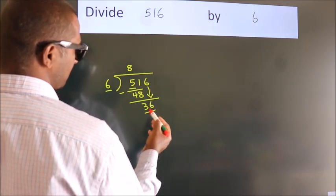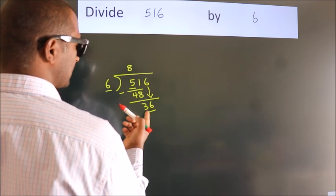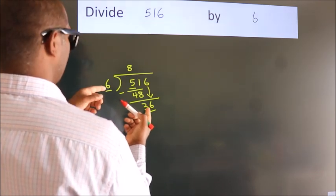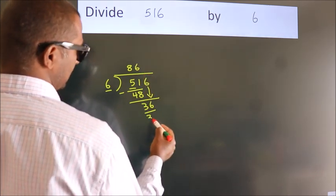So, 36. When do we get 36? In the 6 times table, 6 times 6 equals 36.